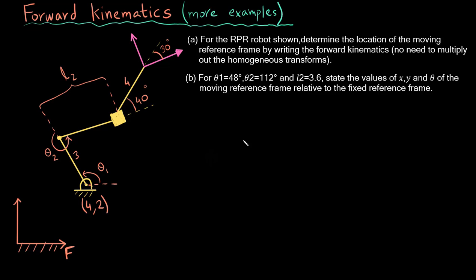The second part says that for theta1 = 48 degrees, theta2 = 112 degrees, and L2 = 3.6, state the values of x, y, and theta of the moving reference frame relative to the fixed reference frame. In Part b, we input the specific values of theta1, theta2, and L2 into the homogeneous transform from Part a to extract x, y, and the orientation theta.